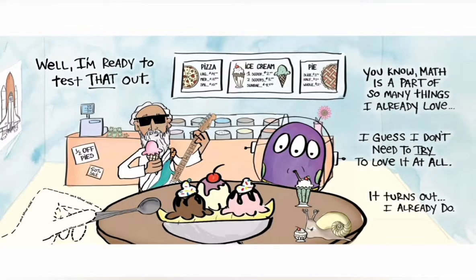You know, math is a part of so many things I already love. I guess I don't need to try to love it at all. It turns out I already do. Hey look at that, the old Greek dude is literally having ice cream and playing a guitar with shades, and the beautiful little alien. How is the alien doing that? The alien is literally putting the straw through his space helmet. I thought nothing can go past that. I know, right? It's so crazy.